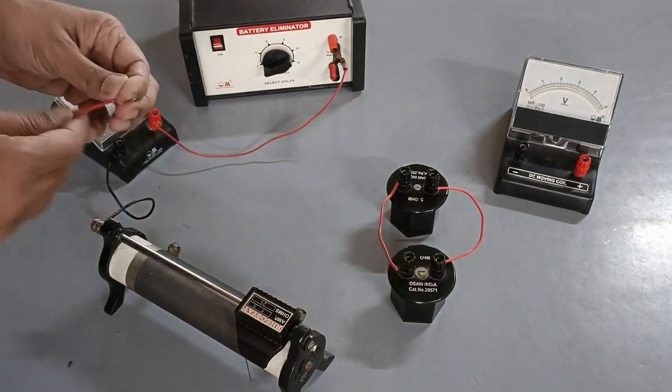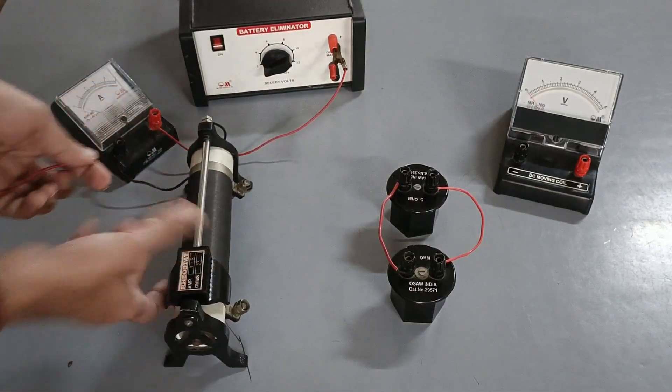Connect the other end of the rheostat with end A of the resistor as shown.